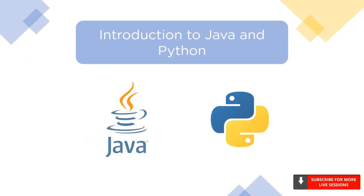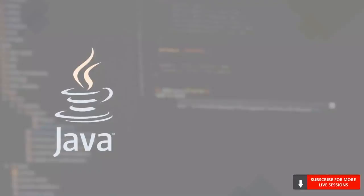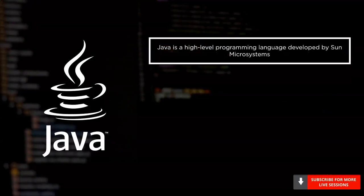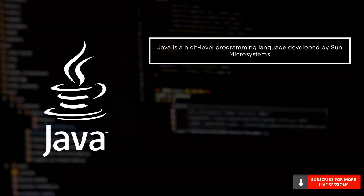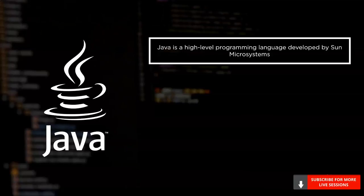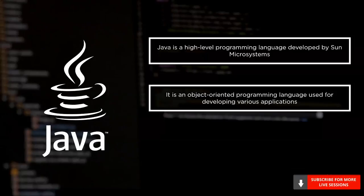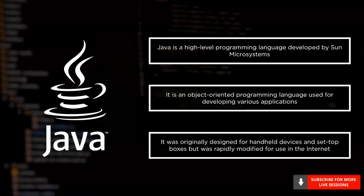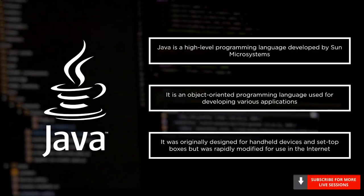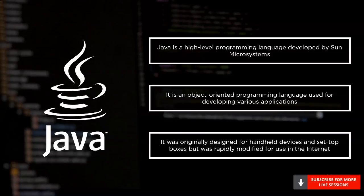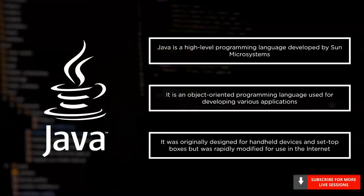Java was developed by Sun Microsystems. It is a fairly robust and high-level language. It is an object-oriented language and so adheres to all the OOP concepts like abstraction and encapsulation. It was originally designed for use in small hardware like set-top boxes and handheld devices, but due to the increasing popularity of the internet it was quickly modified to be used on the World Wide Web.